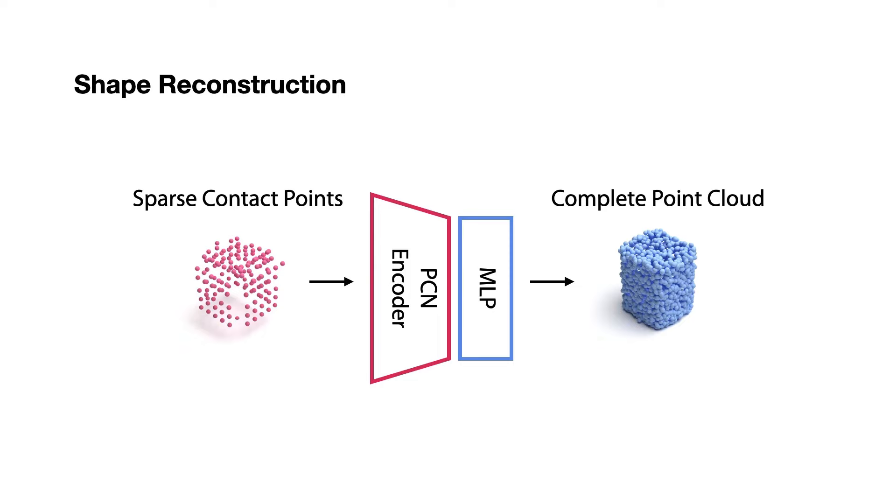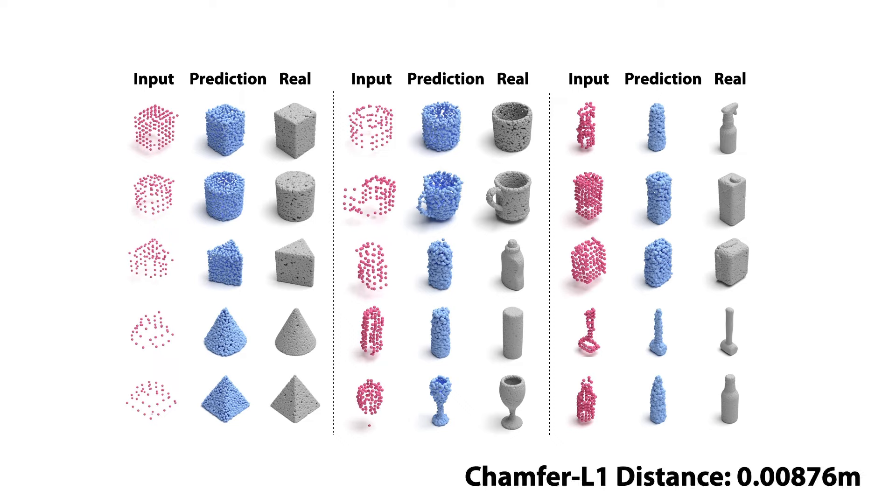Our shape reconstruction model takes the sparse and noisy contact points to generate a dense and complete 3D shape of the object. We stack two PointNet layers to encode the input and then feed the global feature vector into a decoder network with fully connected layers to produce the final point cloud. Our results obtained an average of 0.00876 meter chamfer distance score. The prediction on objects with primitive shapes generally has near perfect performance.